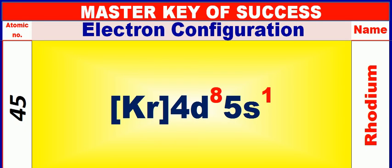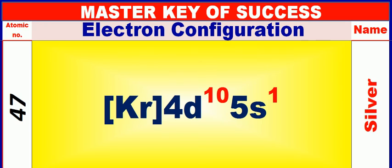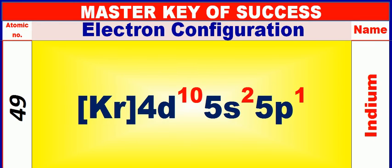Atomic number is 45 and name of atom is Rhodium. Atomic number is 46 and name of atom is Palladium. Atomic number is 47 and name of atom is Silver. Atomic number is 48 and name of atom is Cadmium. Atomic number is 49 and name of atom is Indium. Atomic number is 50 and name of atom is Tin.